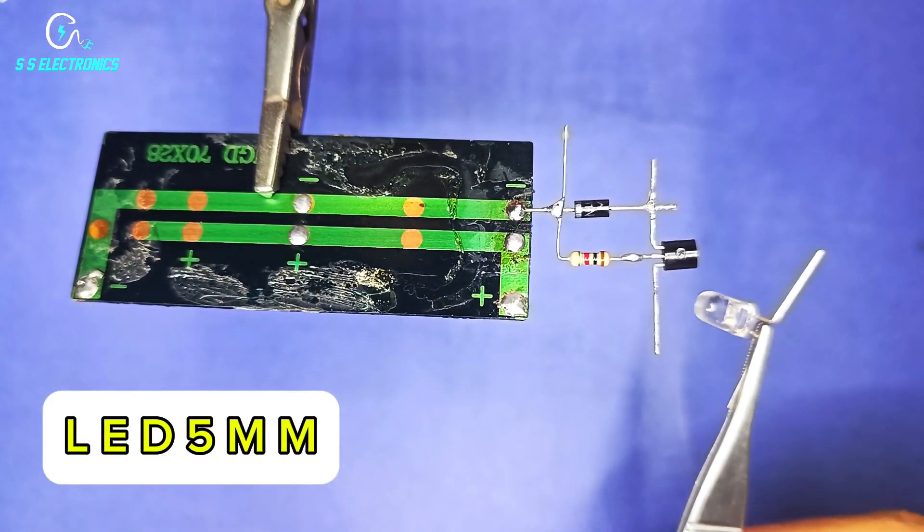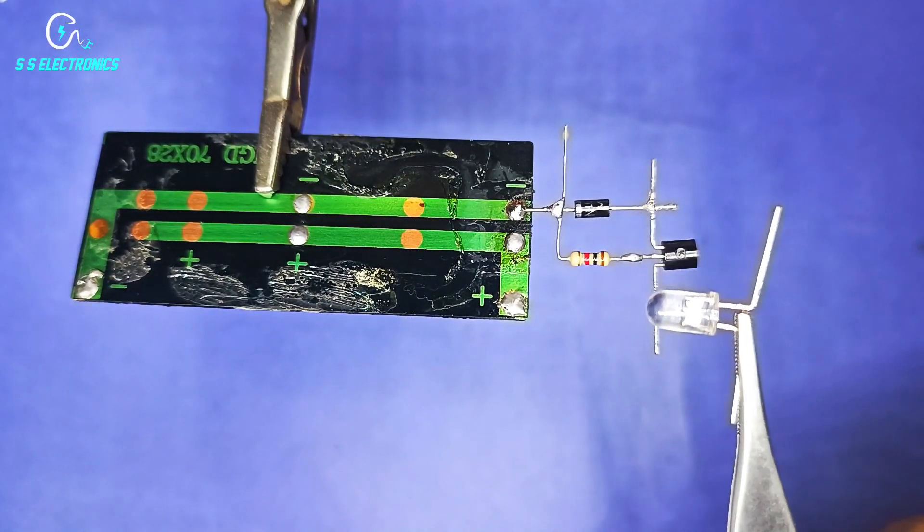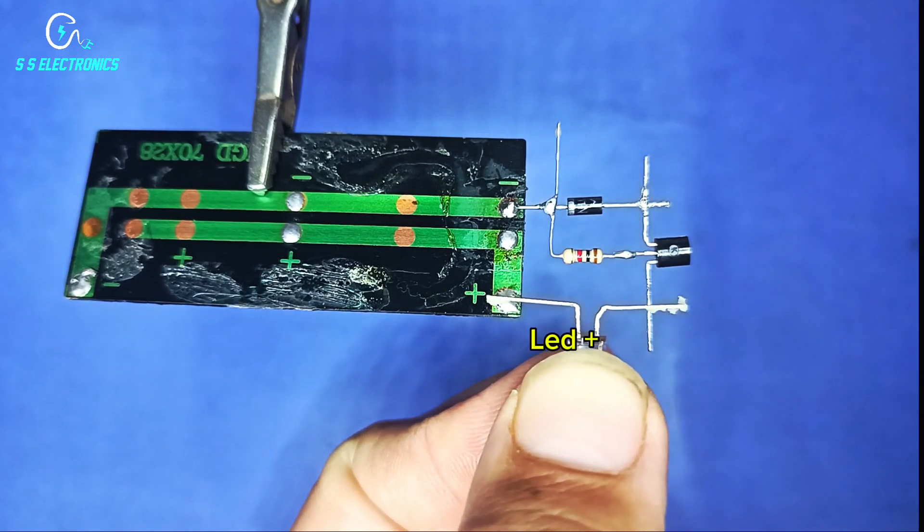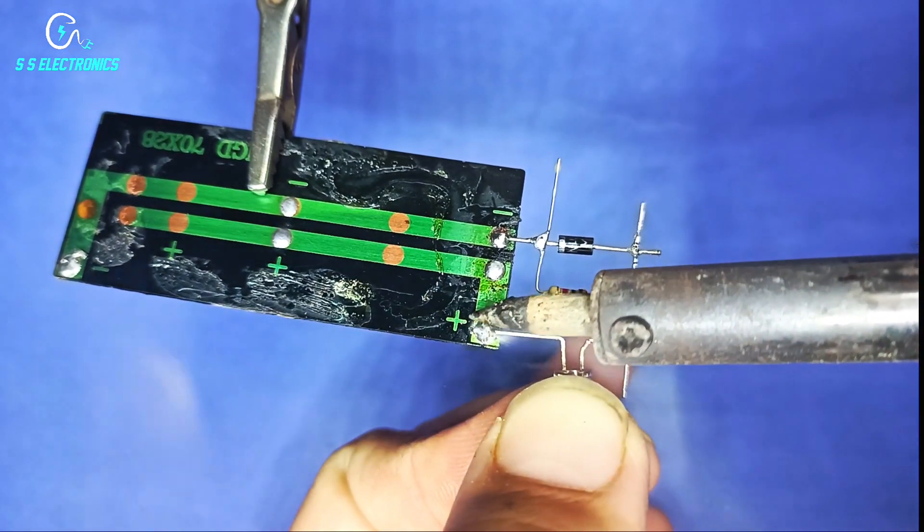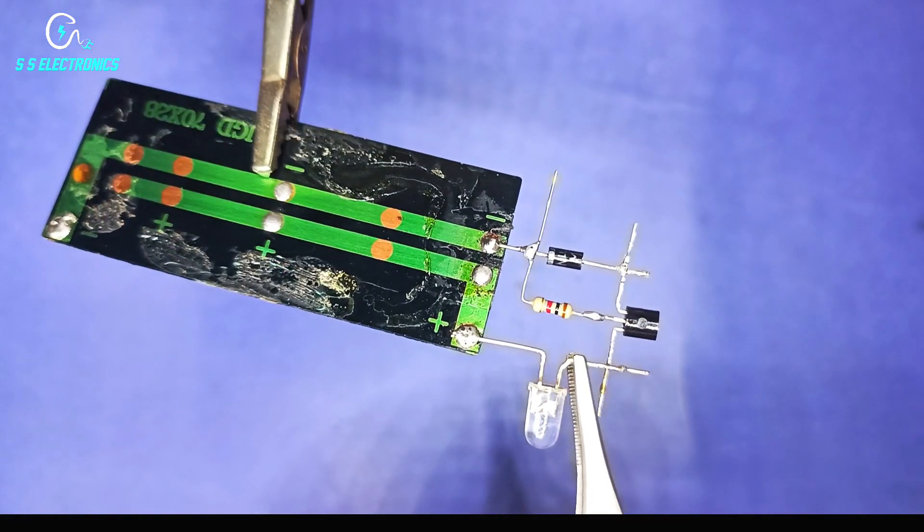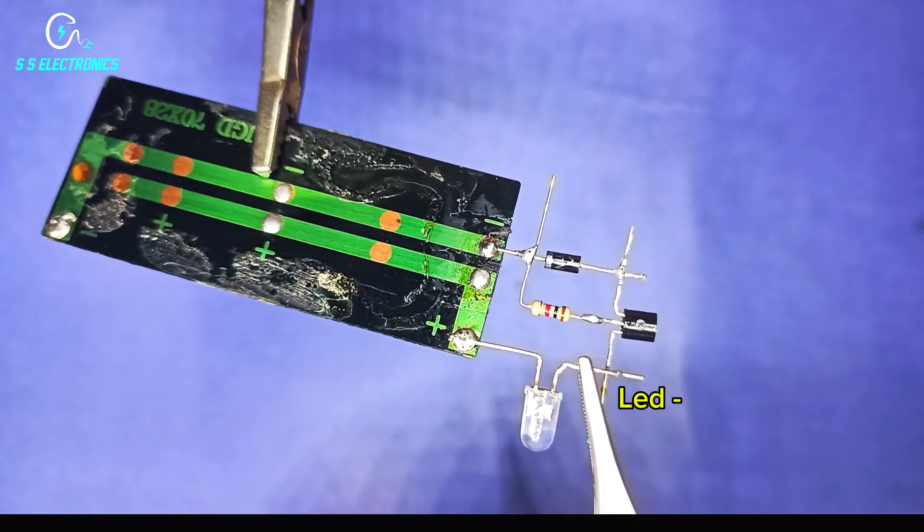LED 5mm. LED positive pin connecting with solar panel positive side. LED negative pin connecting with transistor collector pin.